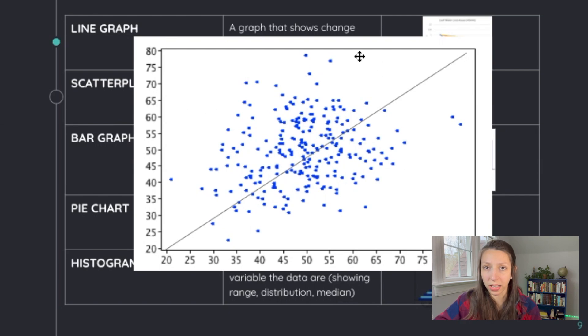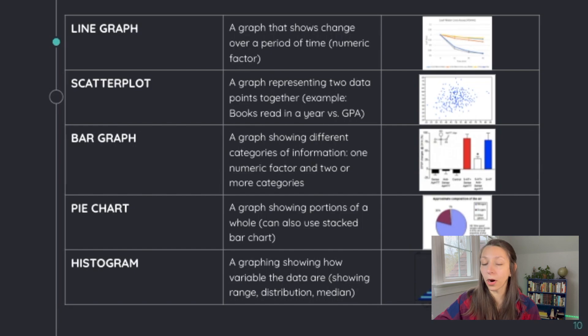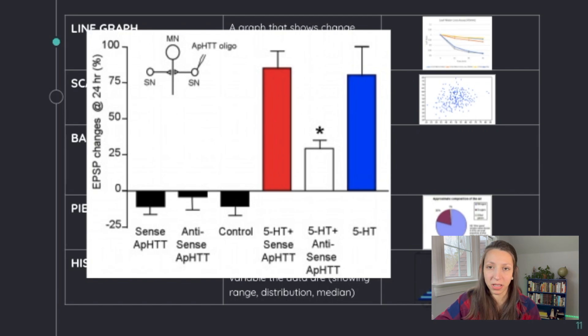A bar graph is a graph that a lot of students are very familiar with, and this is when we're comparing different categories. In a lot of biological experiments, we'll also see error bars on bar graphs. If you didn't calculate these or your data set does not display these, you don't need to include them.